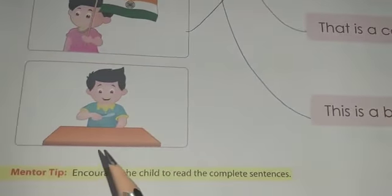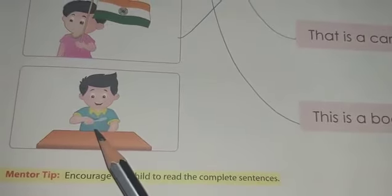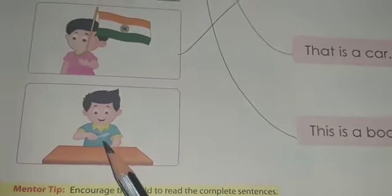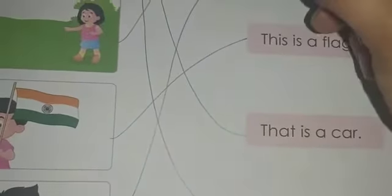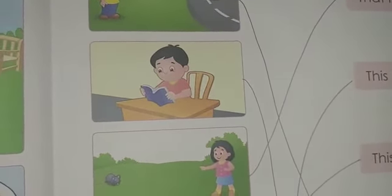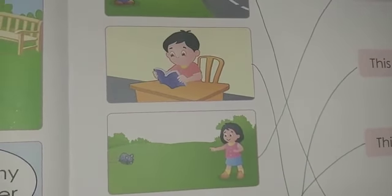Next, this boy has a spoon in his hand and it's very close to him, so 'This is a spoon'. We'll match this with the sentence 'This is a spoon'. In this way you are going to read page number eight and do the exercise given on page number nine. I hope it is clear to you.